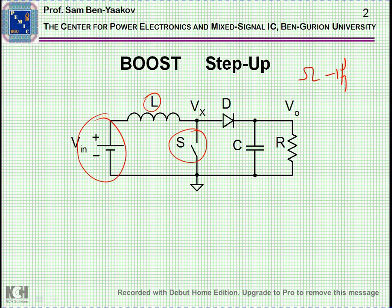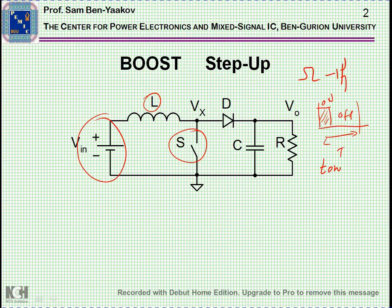What is a periodic cycle? If we have a period of T, then we have some time on and then off. This will be T on — the time that the switch is on. And therefore, T on over the period is defined as the duty cycle.